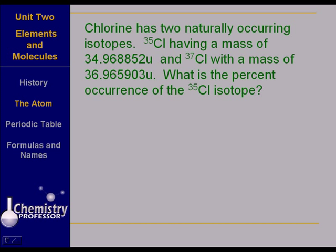Now here is an interesting problem. Chlorine has two naturally occurring isotopes: Chlorine-35 having a mass of 34.968852u and chlorine-37 with a mass of 36.965903u. What's the percent occurrence of the chlorine-35 isotope? Well, I don't know.